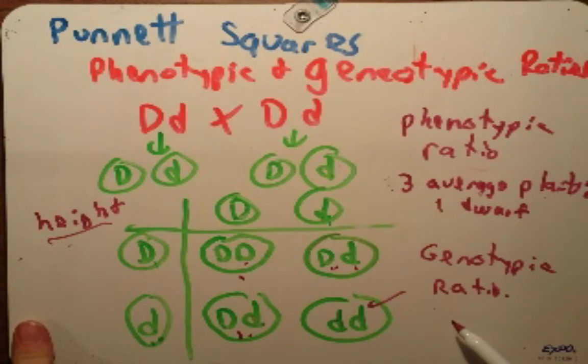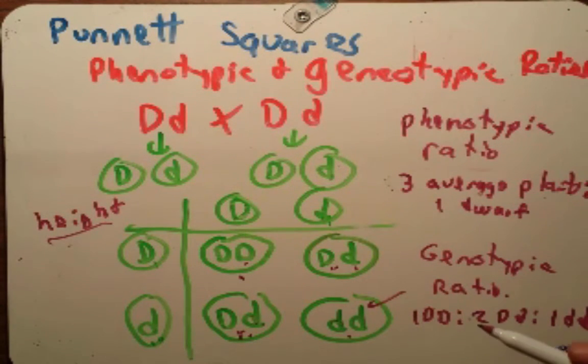Now our genotypic ratio is similar, except we're going to have three categories. We have one big D big D here. We have two heterozygotes, big D little d. So we'll say we have two big D little d. And finally we have one little d little d. So three average size plants to one dwarf size plant. And then the genotypic ratio says we have one big D big D, two big D little d, and one little d little d as our predicted phenotypic ratios.